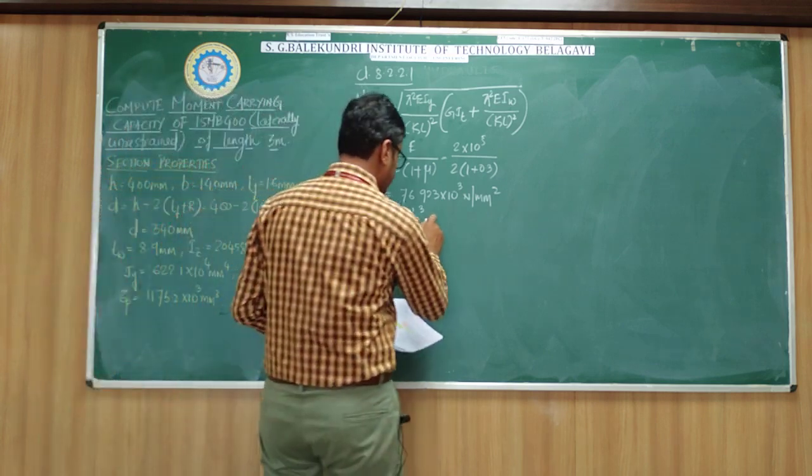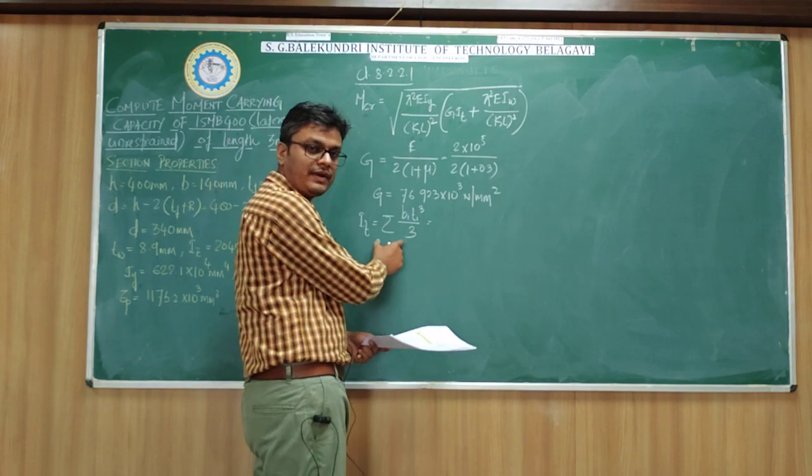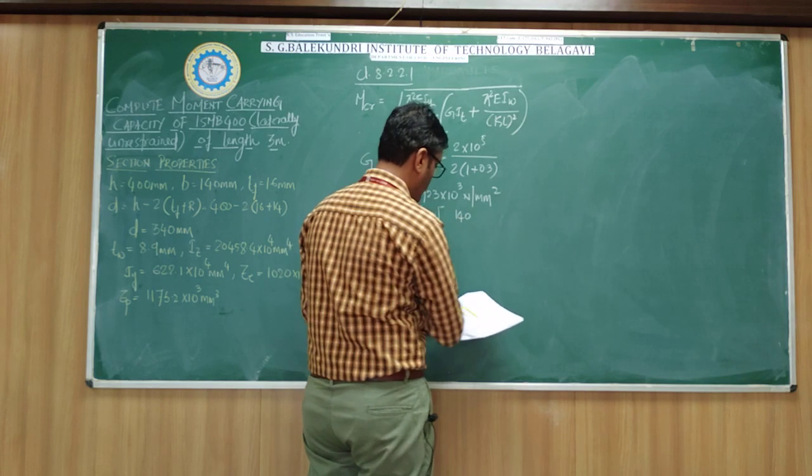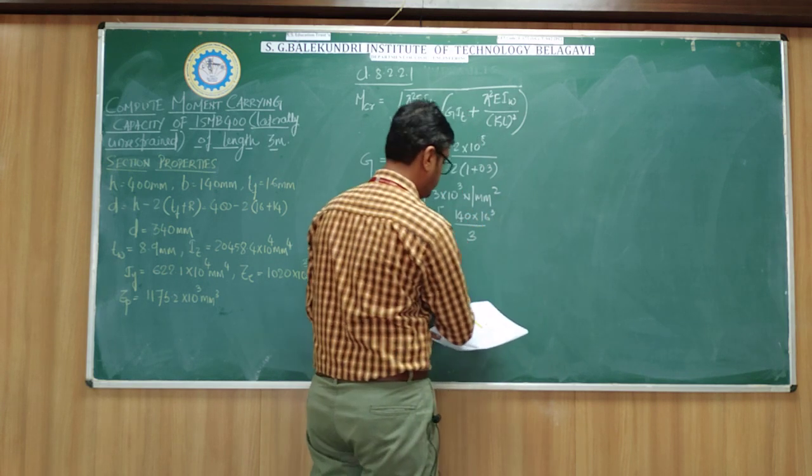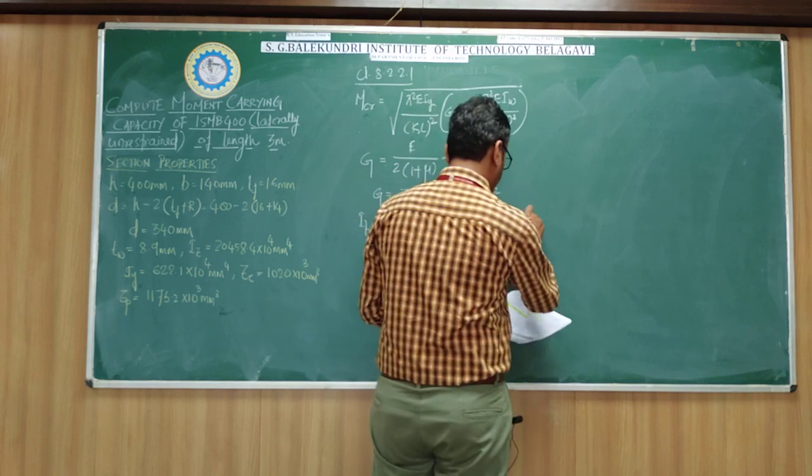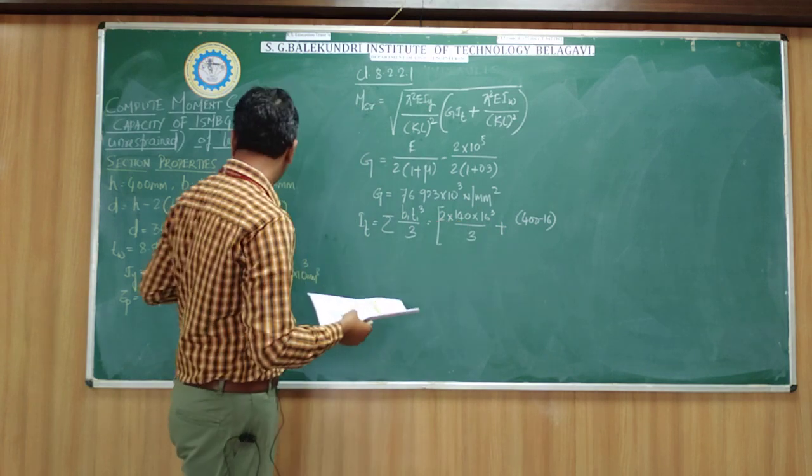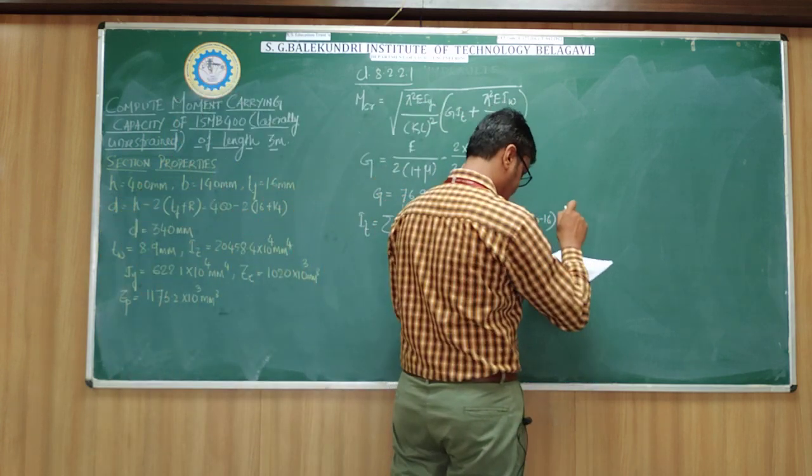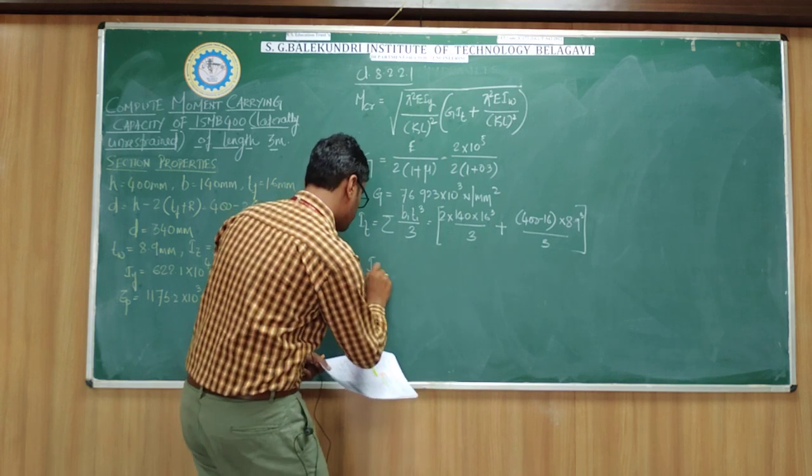Since ours is an I-section which consists of 2 flanges and 1 web, there will be 2 terms. The first term will be for the 2 flanges and the second term for the web. So 2 × 140 × 16³/3 for the flanges, plus (400-16) × 8.9³/3 for the web. That is the center-to-center distance between the flanges.